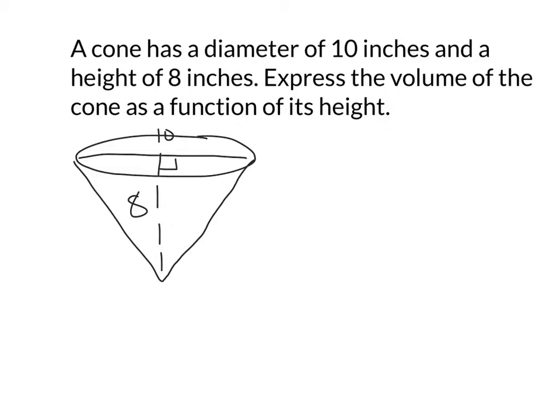These are always perpendicular. We want to express the volume of the cone as a function of its height. So that means volume, which is normally one-third of the base area, which is pi r squared times h.